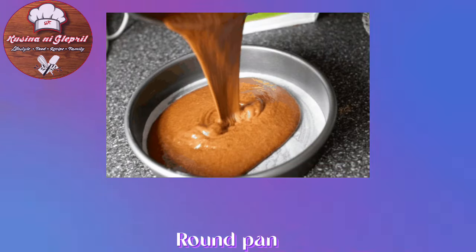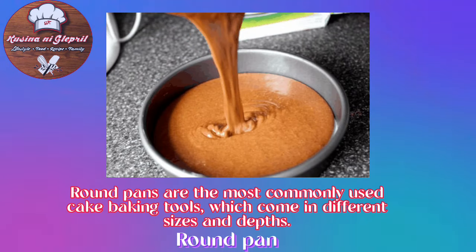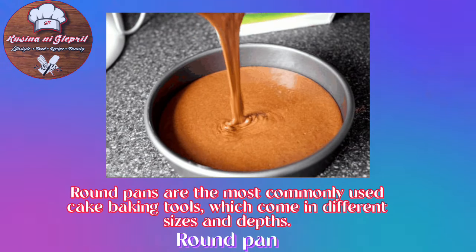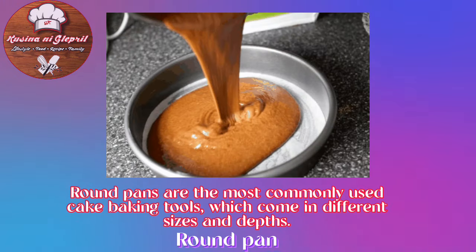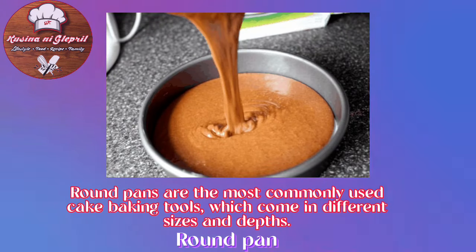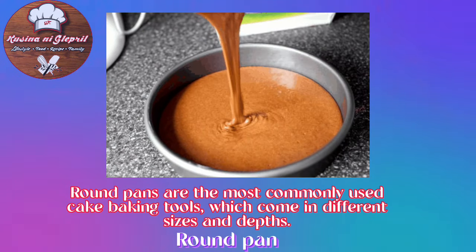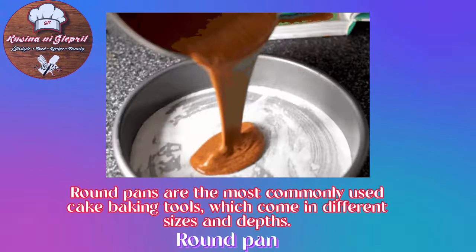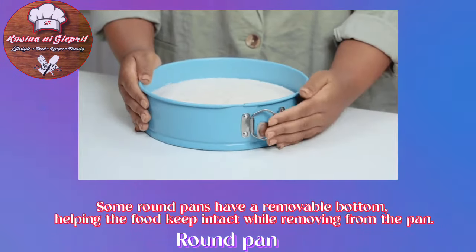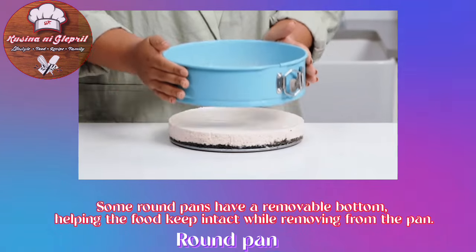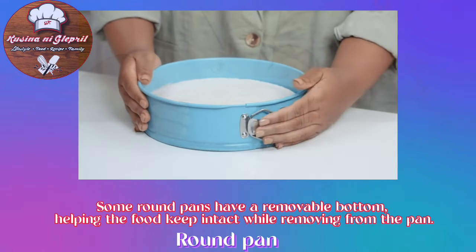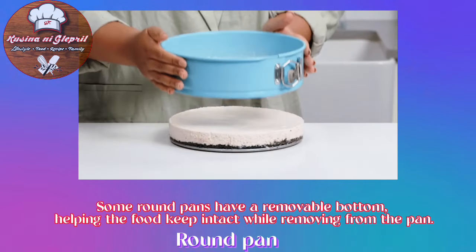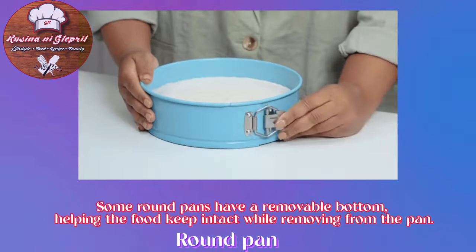Round Pan: Round pans are the most commonly used cake baking tools, which come in different sizes and depths. Some round pans have a removable bottom, helping the food keep intact while removing from the pan.